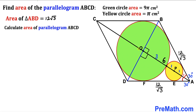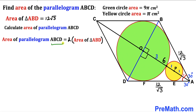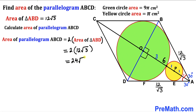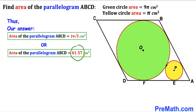For the final step, we calculate the area of parallelogram ABCD. Triangle ABD and triangle BCD are congruent by symmetry, so they have equal areas. The area of parallelogram ABCD = 2 × area of triangle ABD = 2 × 12√3 = 24√3 cm² ≈ 41.57 cm².